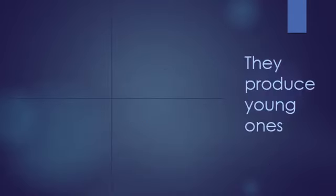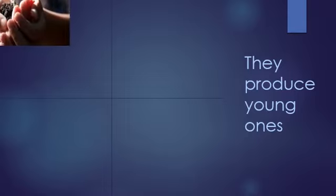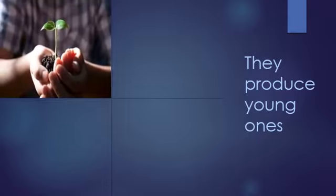What do we mean by growing? Living things produce young ones. Have you seen a small plant grow into a big plant? If you have a small garden, you can observe that a plant that was very small a few days back has grown up — it started with very few leaves and then had many leaves. That is called growing.